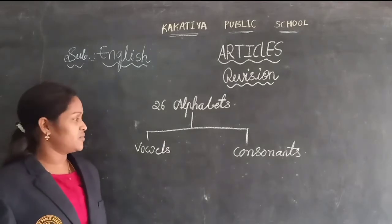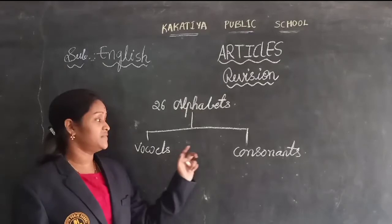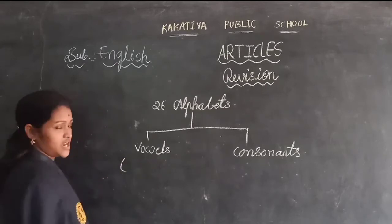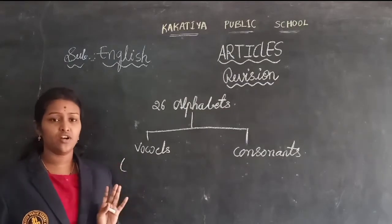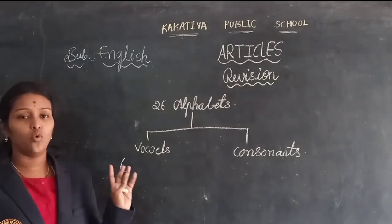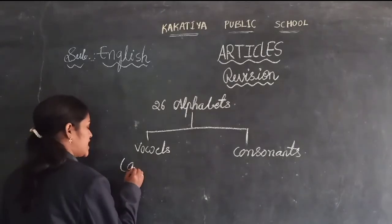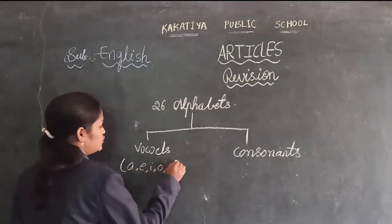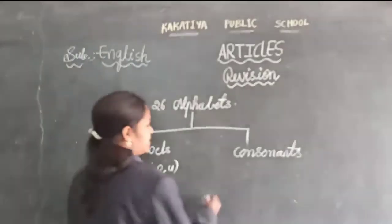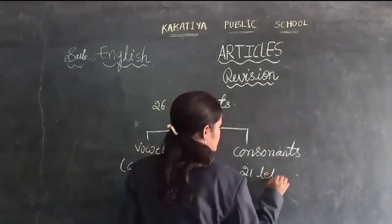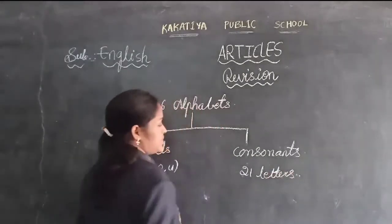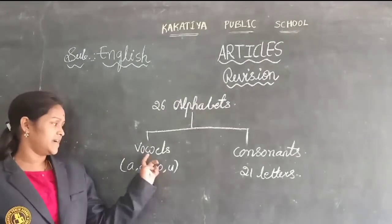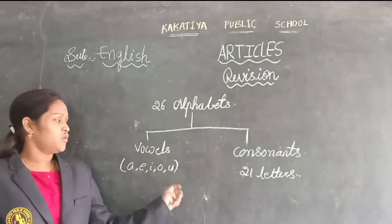From the 26 alphabets, which come under vowels and which come under consonants? There are total five vowels. What are they? A, E, I, O, U. And the remaining 21 letters are consonants. These five letters — A, E, I, O, U — are the vowels, and the remaining 21 letters are consonants.